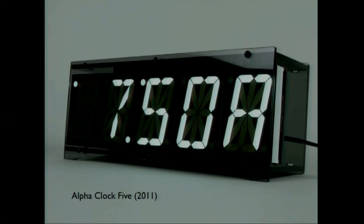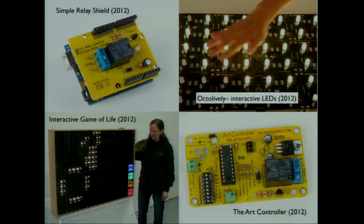This one is Alpha Clock 5 — it's another one of our hackable LED products. Here are some of the things we were working on last year: a relay shield for Arduino designed to be much simpler to use than the others out there; newer open source interactive LED kits; an interactive Game of Life display for a museum; and an art controller, which is sort of a replacement for 555 timer boards.